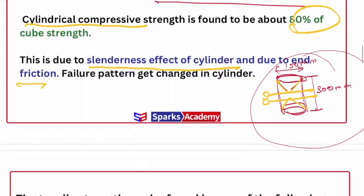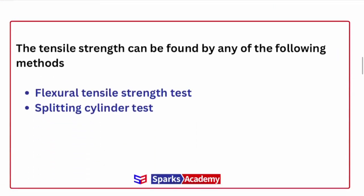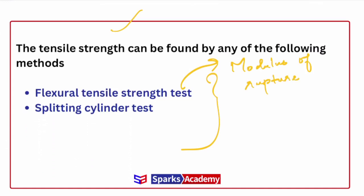Now this is the tensile strength. For tensile strength we have two tests: one is the flexural tensile test, and the other is the splitting cylinder test. Both are important. The flexural tensile strength is measured by the modulus of rupture test.